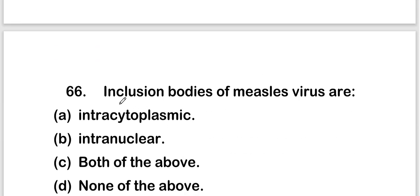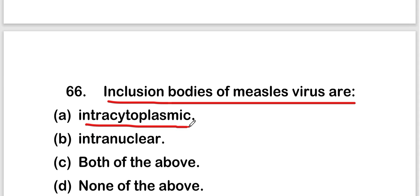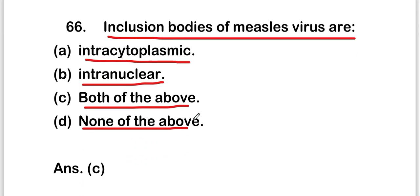The next question is: inclusion bodies of measles virus are intracytoplasmic, intranuclear, both of the above, or none of the above. The right answer is option C — both of the above. Inclusion bodies of measles virus are both intracytoplasmic and intranuclear.